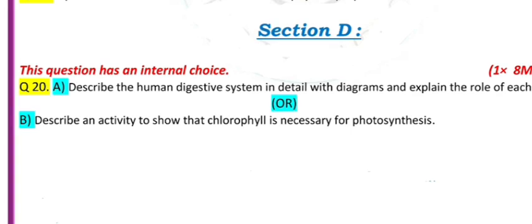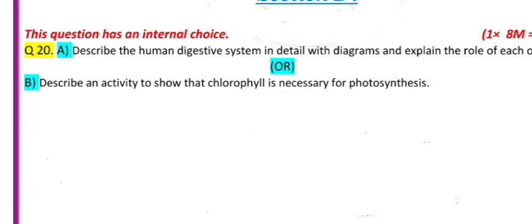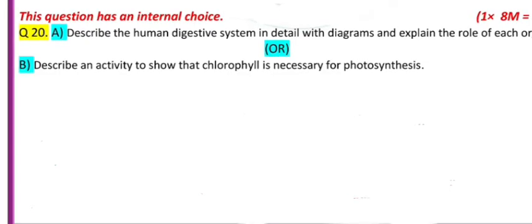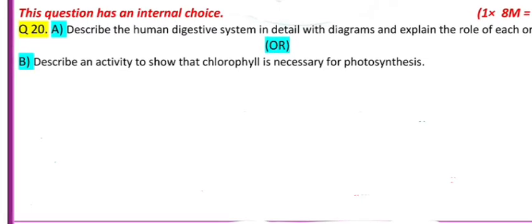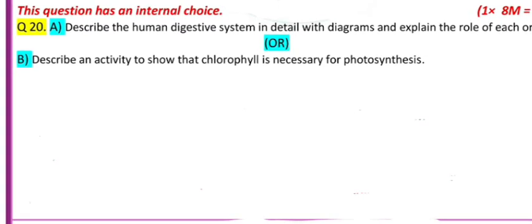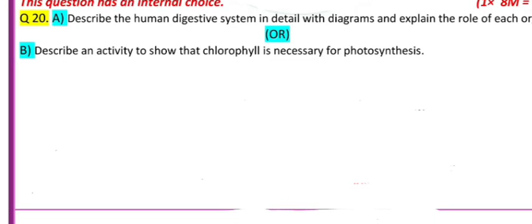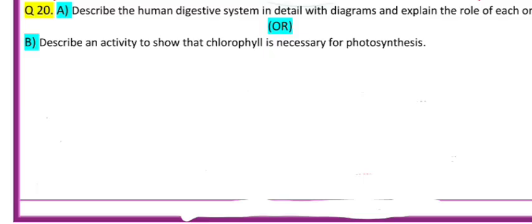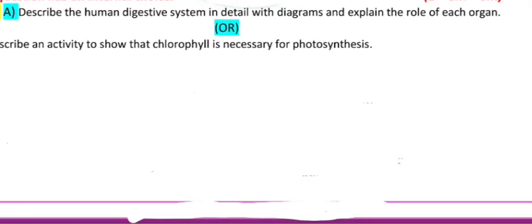Section D: This question has an internal choice. One question you have to attempt and eight marks you can expect. Question 20: Describe the human digestive system in detail with diagrams and explain the role of each organ, or if not, you can attempt Question B - Describe an activity to show that chlorophyll is necessary for photosynthesis.